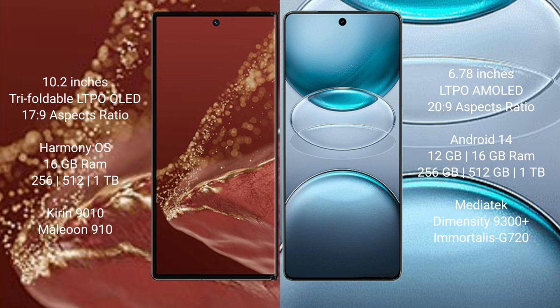The Huawei Mate XT Ultimate runs on the HarmonyOS operating system, while the Vivo X100s Pro runs on OriginOS 14. The Mate XT Ultimate comes with 16GB RAM, 256GB or 512GB or 1TB internal storage, and a Kirin 9000S processor with GPU 910. The Vivo X100s Pro comes with 12GB or 16GB RAM, 256GB, 512GB, or 1TB internal storage, and a MediaTek Dimensity 9300 Plus processor with GPU 220.